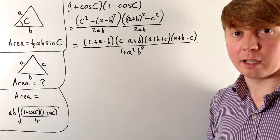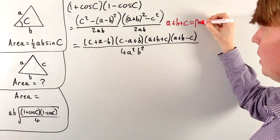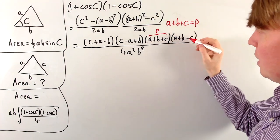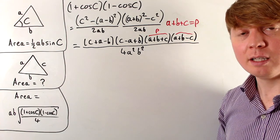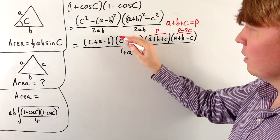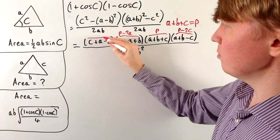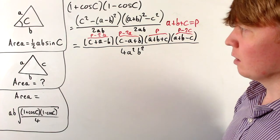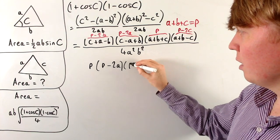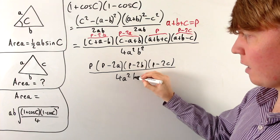Rewriting in alphabetical order, the numerator is p(p minus 2a)(p minus 2b)(p minus 2c), all divided by 4a²b². This is our expression for (1 plus cos C)(1 minus cos C). Substituting back into the area formula — square rooting and dividing by 4 (making 16 total under the root) — and multiplying by ab: the sqrt(a²b²) gives 1 over ab, which cancels with the ab outside, leaving sqrt(p(p minus 2a)(p minus 2b)(p minus 2c) / 16).